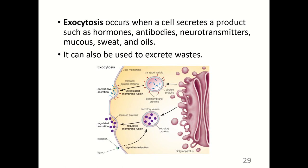The organelle called the Golgi apparatus produces vesicles that bud off and include proteins such as hormones, antibodies, neurotransmitters, mucus, sweat, or oils. The secretory vesicles make their way to the plasma membrane, fuse with it, and the secretion is released into the extracellular fluid.